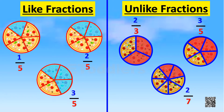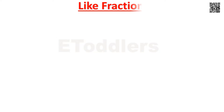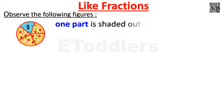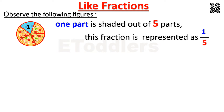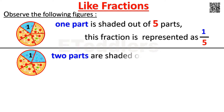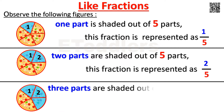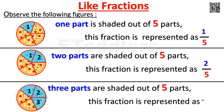Let's learn about like and unlike fractions. First, let's understand like fractions with examples. Observe the following figures. One part is shaded out of five parts — this fraction is represented as 1 by 5. Two parts are shaded out of five parts — this fraction is represented as 2 by 5. Three parts are shaded out of five parts — this fraction is represented as 3 by 5.